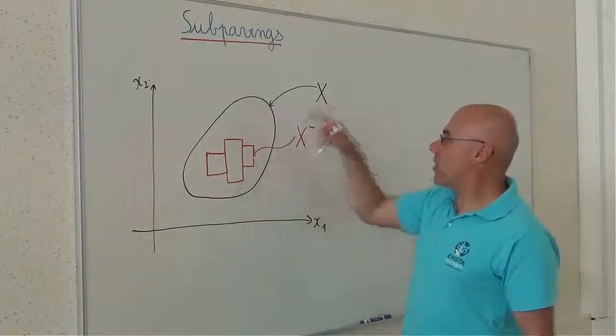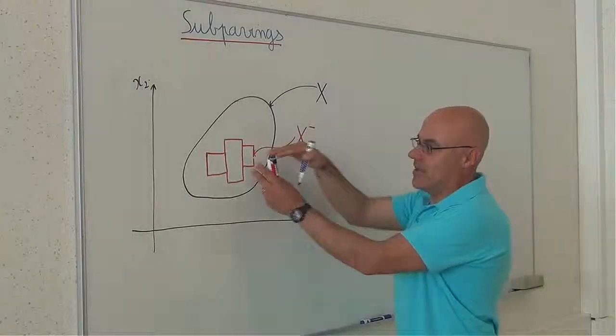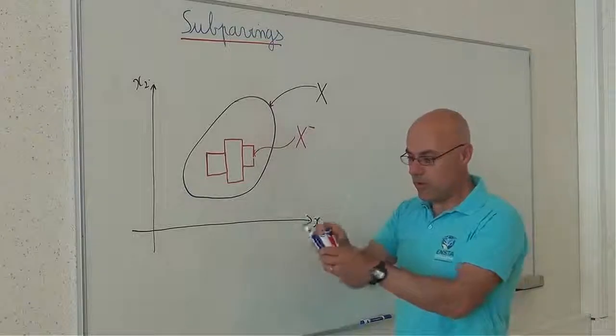If I have an uncertain set x, I can approximate this set by inside using a subpaving, but also from outside.